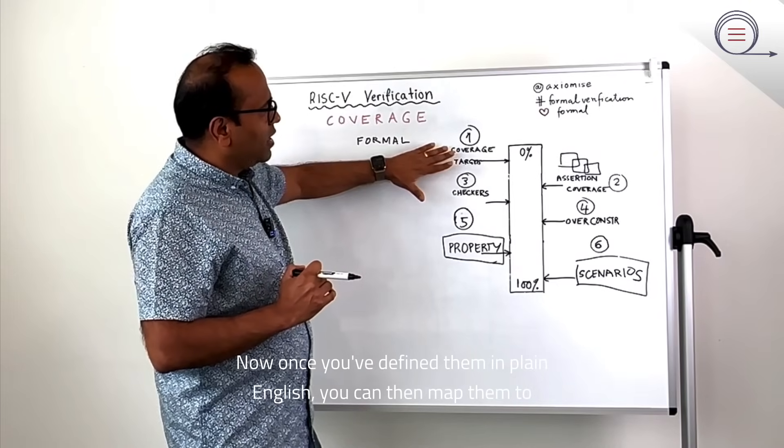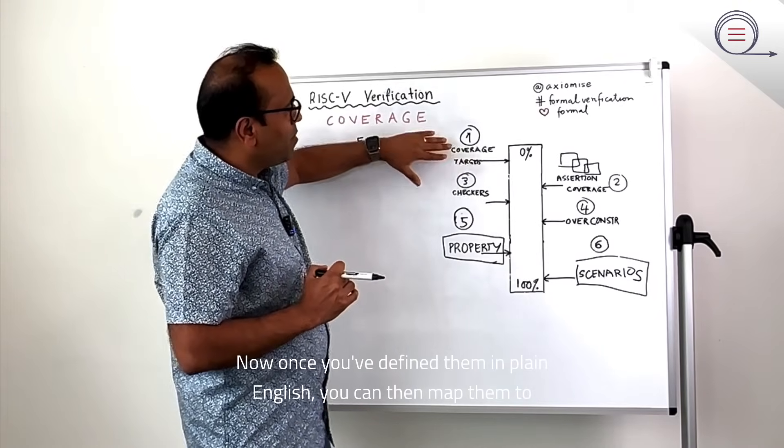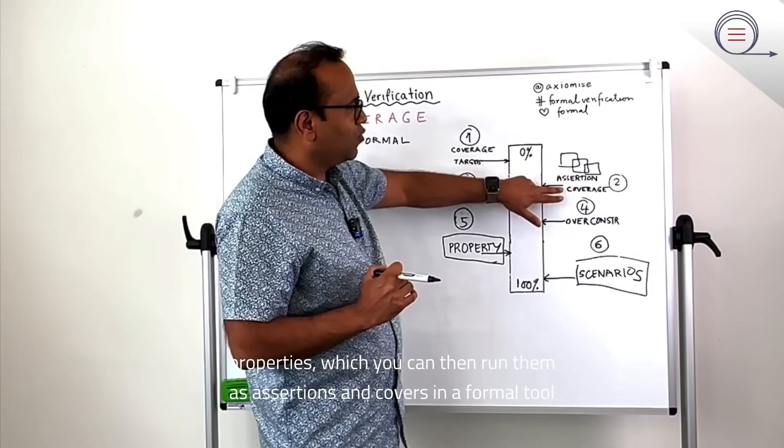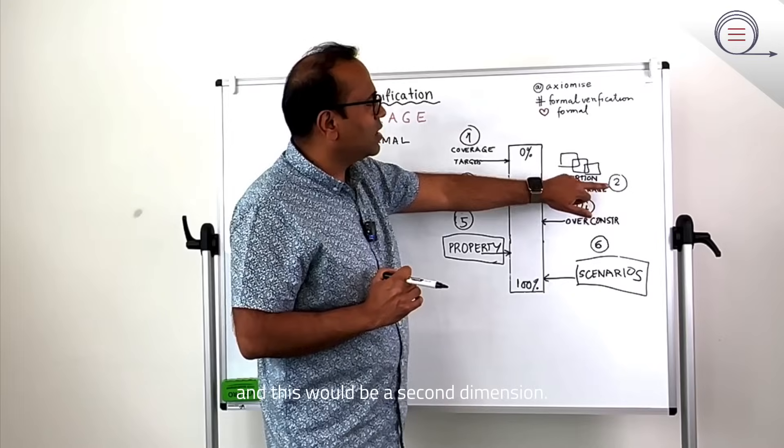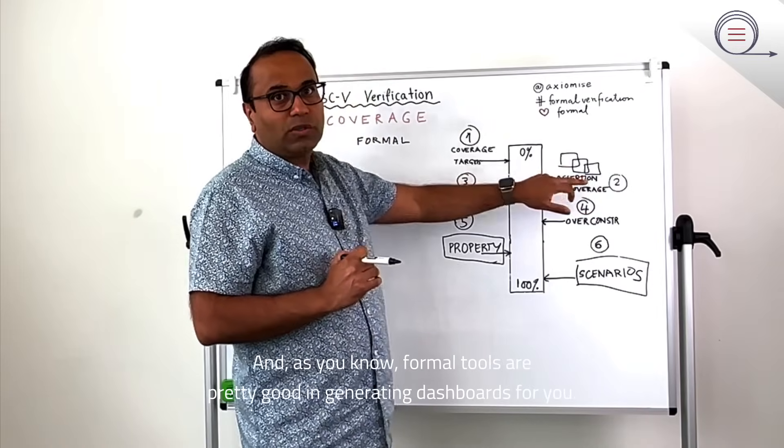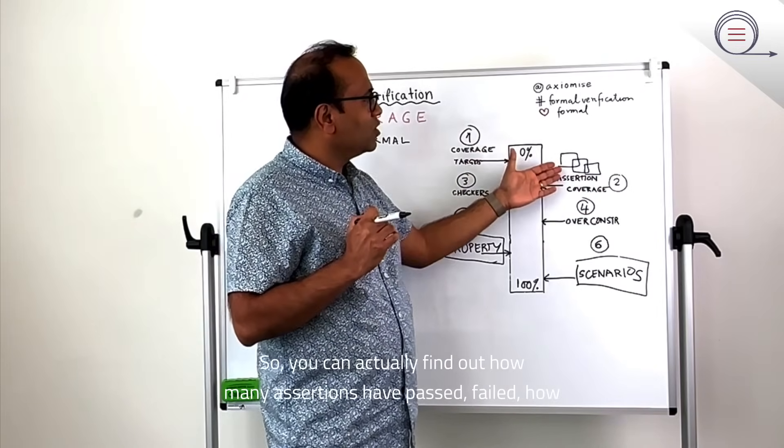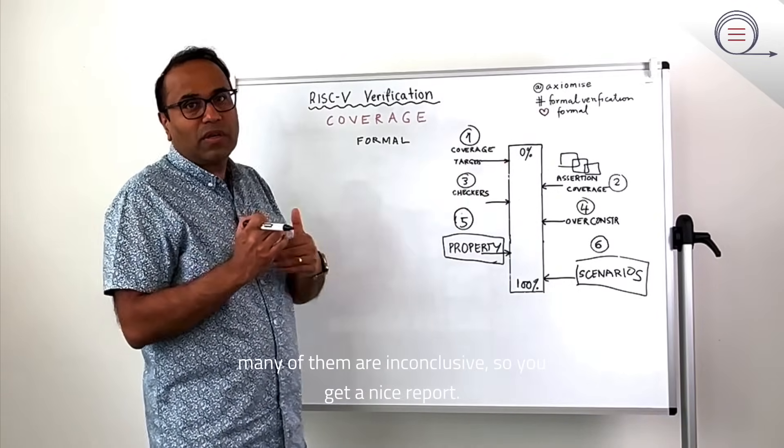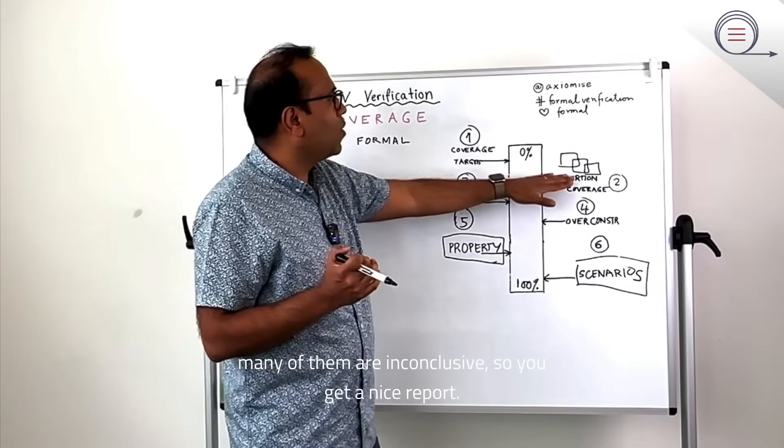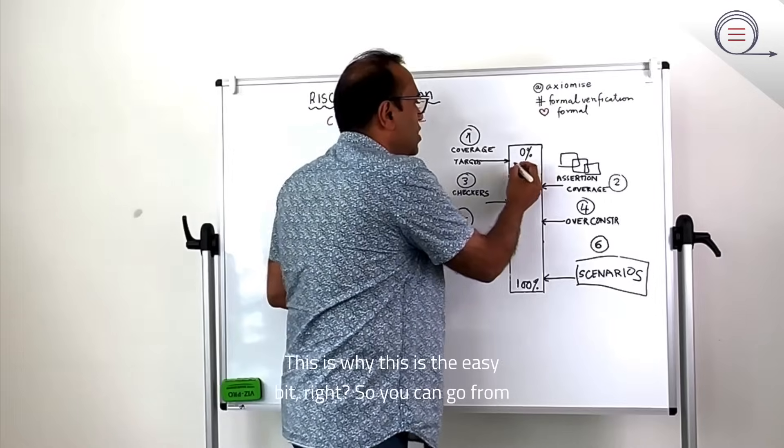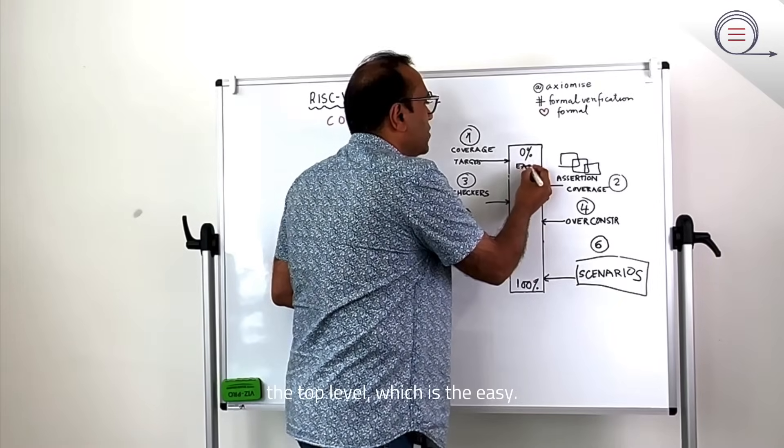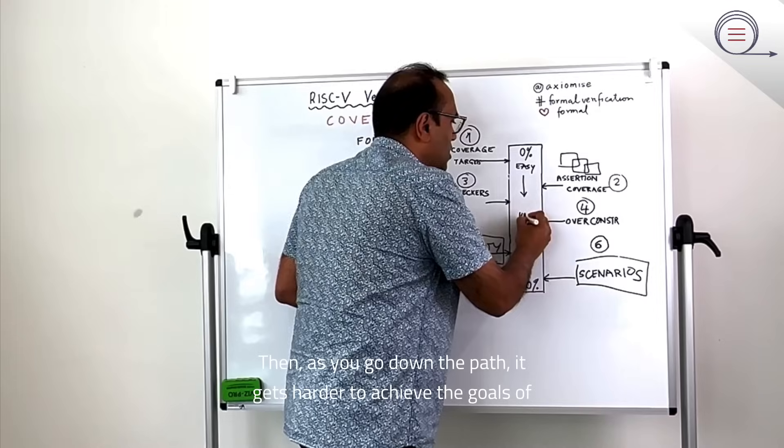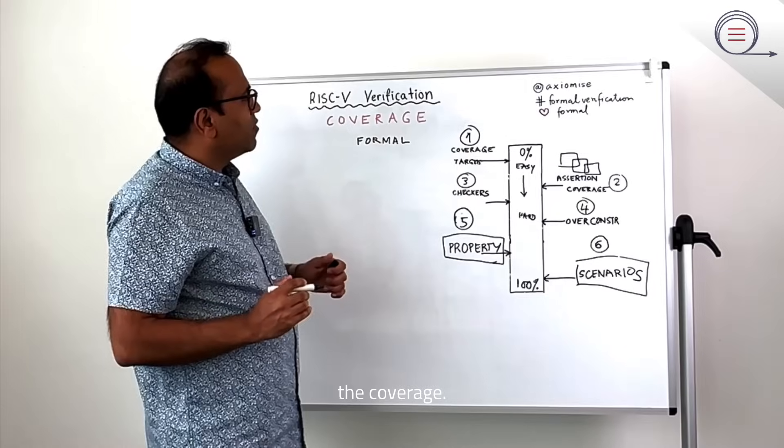Once you've defined them in plain English, you can then map them to properties, which you can then run as assertions and covers in a formal tool. And this would be the second dimension. As you know, formal tools are pretty good at generating dashboards for you. So you can actually find out how many assertions have passed, failed, how many of them are inconclusive. So you get a nice report. And this is the easy bit. You can go from the top level, which is easy, as you go down the path, it gets harder to achieve the goals of the coverage.